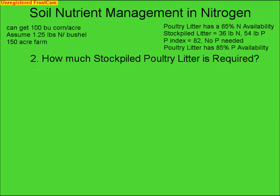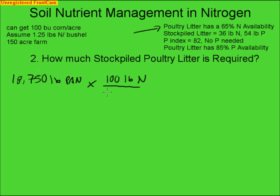The next step is to determine how much stockpiled poultry litter is actually required. We know our total of 18,750 pounds of plant available N. To determine the total quantity of stockpiled poultry litter needed, we need to know how much plant available N it has per pound of total nitrogen. Poultry litter has a 65% plant available nitrogen ratio, so for every 100 pounds of nitrogen, 65 pounds are plant available.